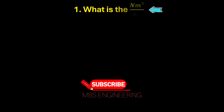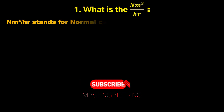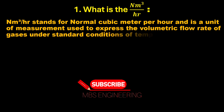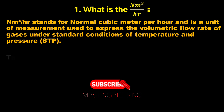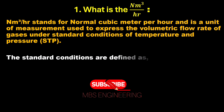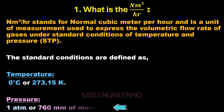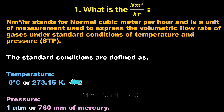We will understand the normal meter cube per hour. Nm³/hr stands for normal cubic meter per hour, and as a unit of measurement, it is used to express the volumetric flow rate of gases under standard conditions of temperature and pressure (STP). The standard conditions are defined as a temperature of 0 degrees Celsius or 273.15 Kelvin, and a pressure of 1 atmospheric pressure or 760 millimeters of mercury.